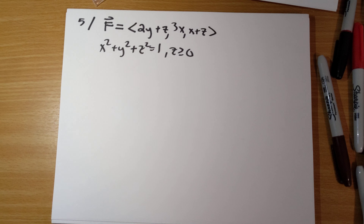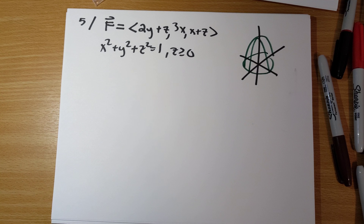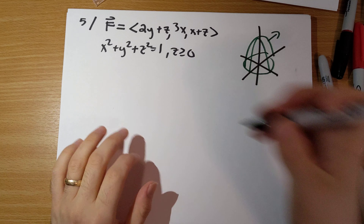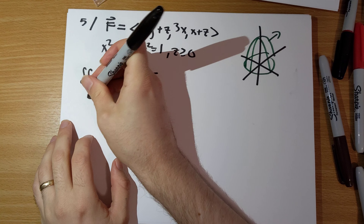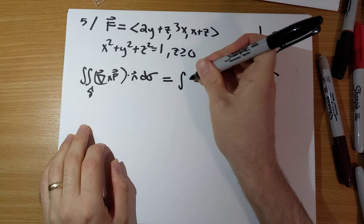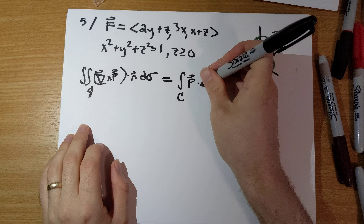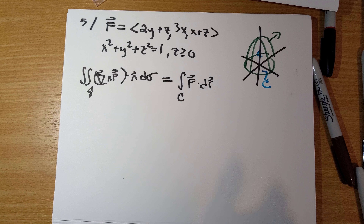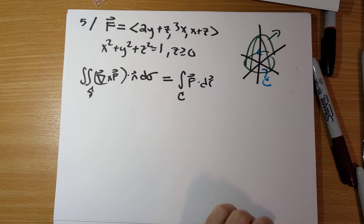So what does this mean? Let's draw a quick picture. Here is the upper unit hemisphere with outward-pointing normal vectors. We need to show Stokes' theorem — that the surface integral of the curl of F over the surface equals the circulation along C of F dot dr, where C is the boundary. So there are two integrals to compute, and we need to see that we get the same thing.